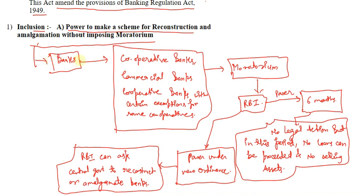We need to understand that there are some banks - it may be cooperative banks, commercial banks, or common cooperative banks but with some exemptions for some cooperatives. If they are in moratorium, then RBI will have the power to take actions against these banks.